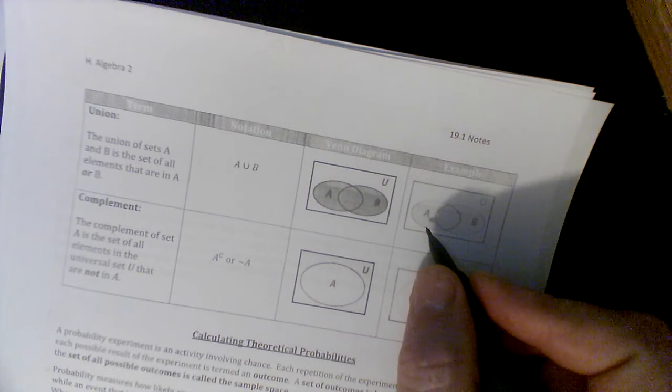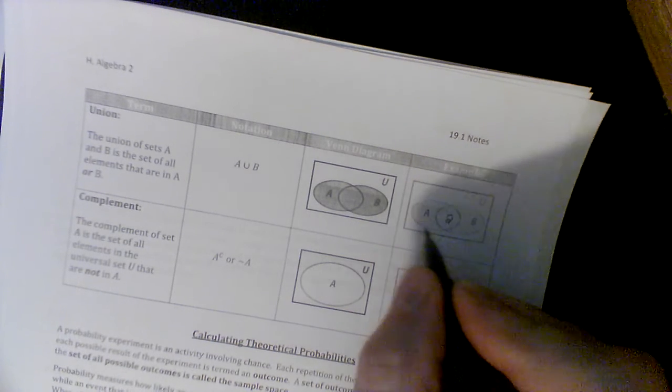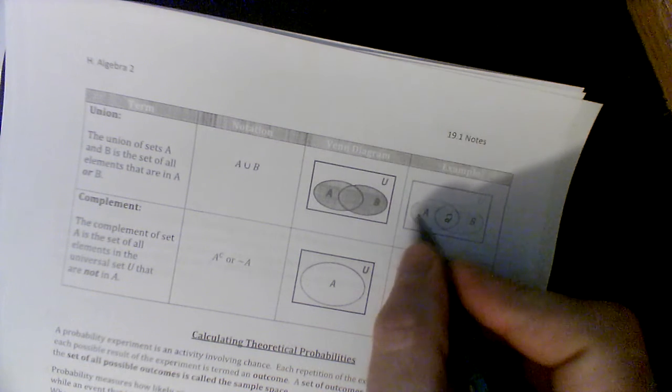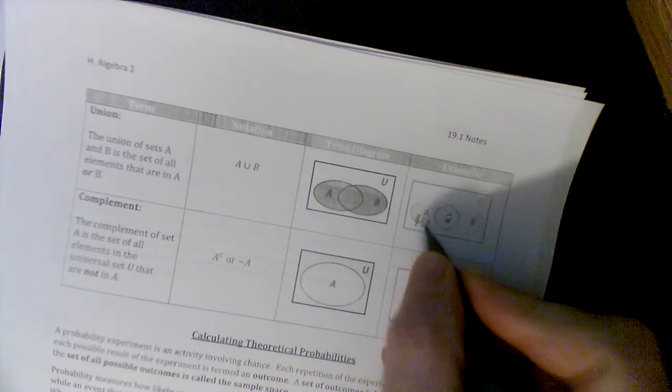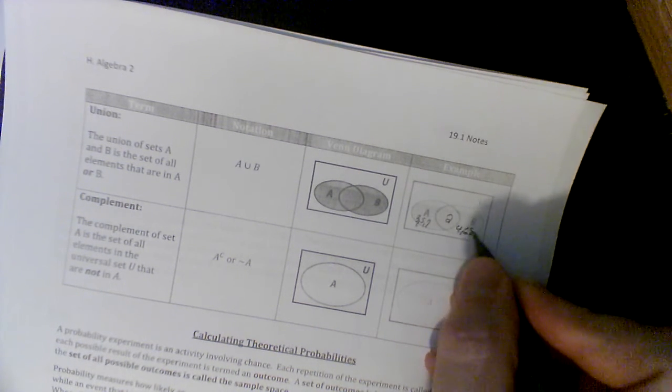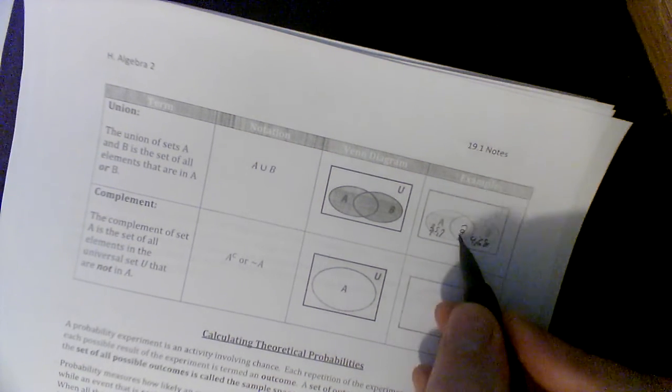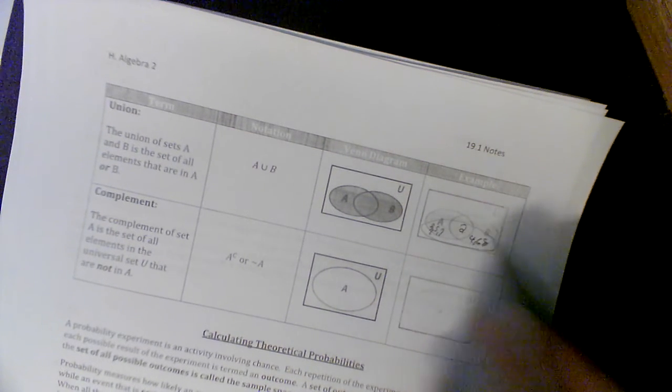So remember A is - A and B cross at 2. And A is 3, 5, and 7. B is 4, 6, and 8. And the union would be all of these. It would be all of those. There's the intersection, but the union is everything in here.